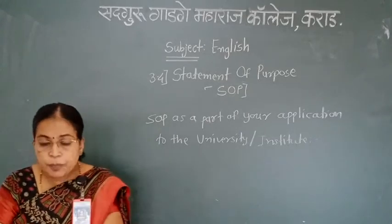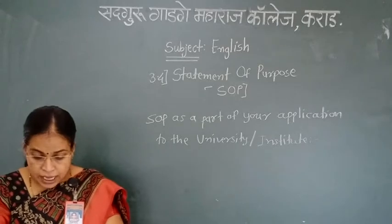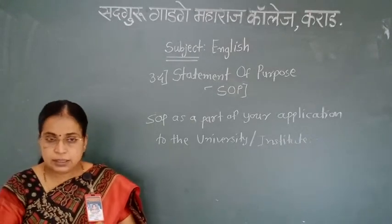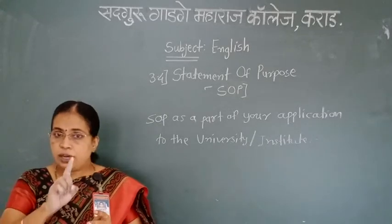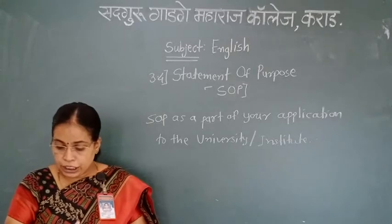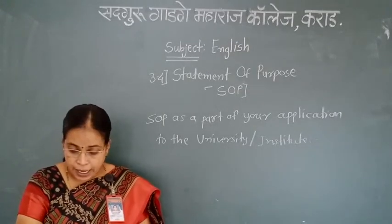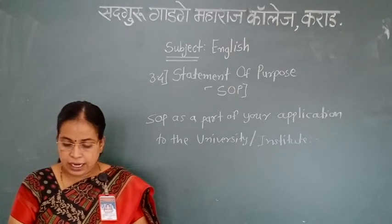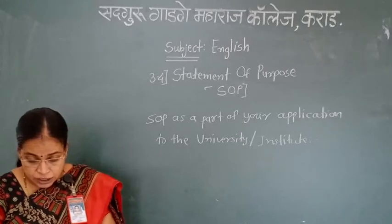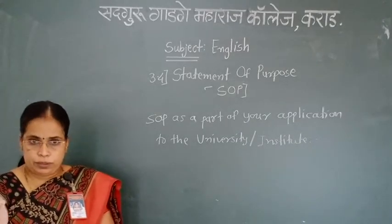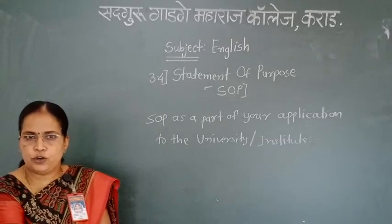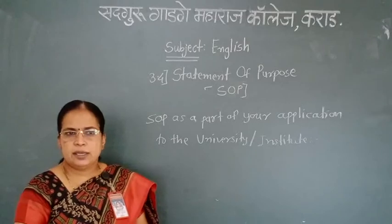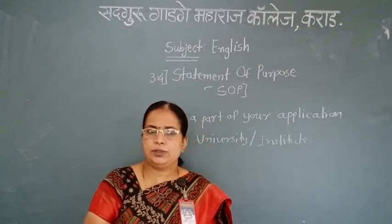Once again to summarise: in the first paragraph, write your introduction, background and aim. In the second paragraph, write your purpose. In the third paragraph, highlight your qualities, hobbies and extracurricular activities. In the fourth paragraph, focus on your experience, project and specialty. In the concluding paragraph, tell how that university or institute is beneficial for you. I think you have enjoyed this lecture. Try to write some samples of SOP — it is very easy to write. Thank you.